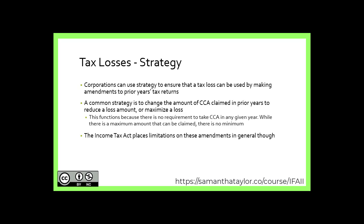Which means there is a strategy when it comes to tax losses. Corporations can use strategy to ensure that these losses can be used by making amendments to prior years' tax returns. One strategy may be to change the amount of CCA claimed in prior years to reduce a tax loss amount or to maximize the loss. This is because there is no requirement to take CCA in a given year, so anything that isn't taken would just build up within the pools for future years. The Income Tax Act places limitations on these amendments in general though, so we won't get too deep into this strategy.